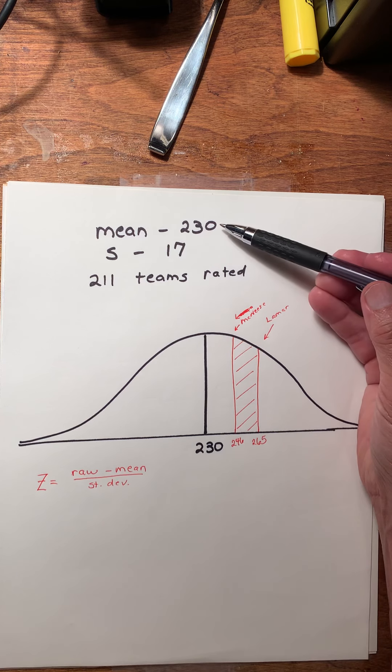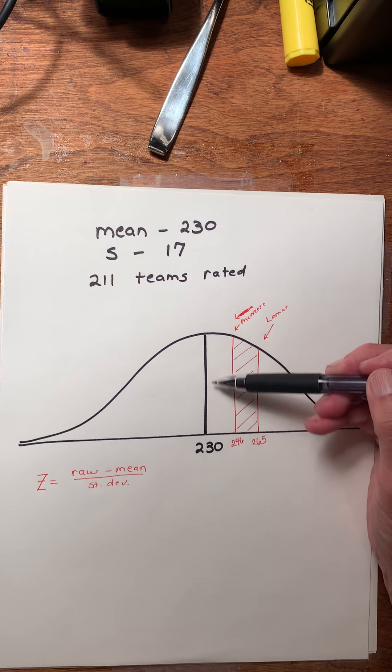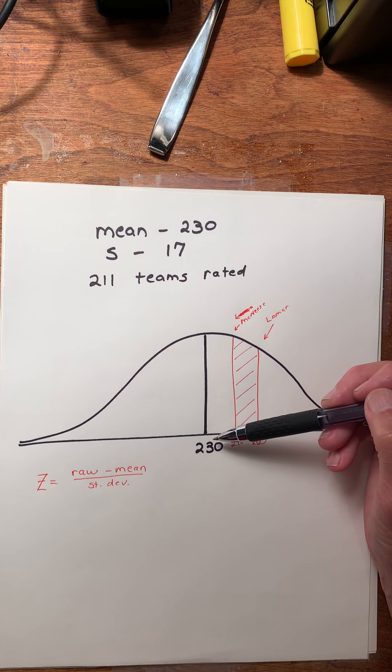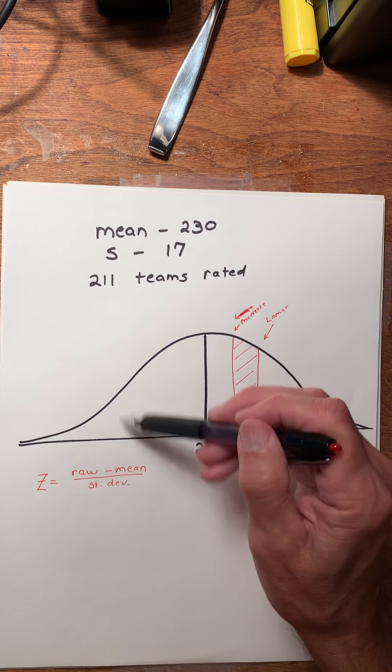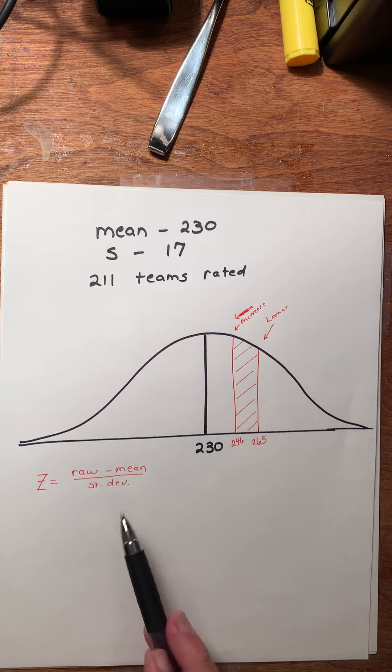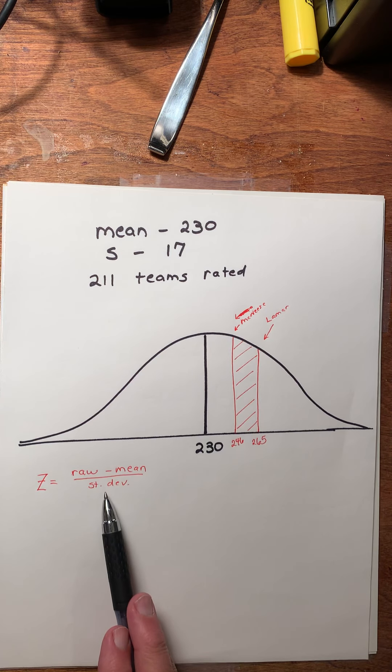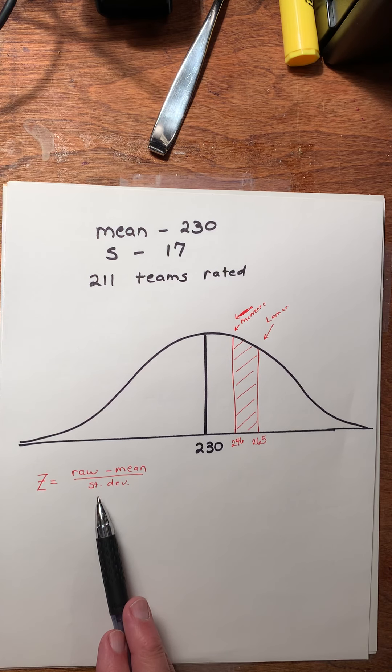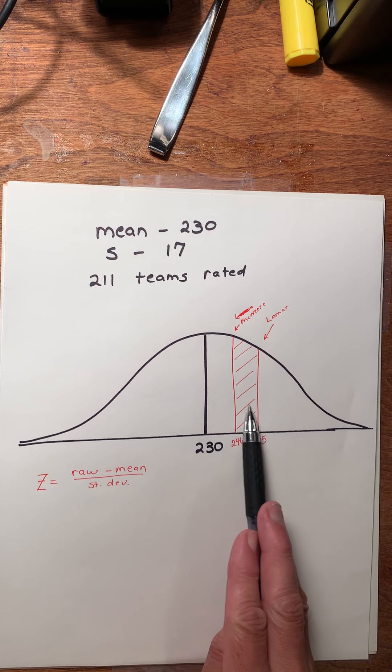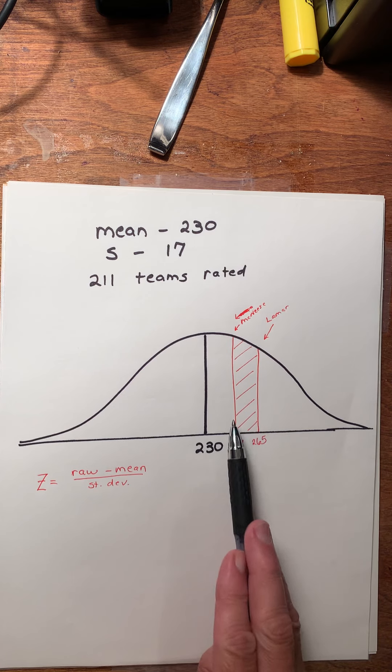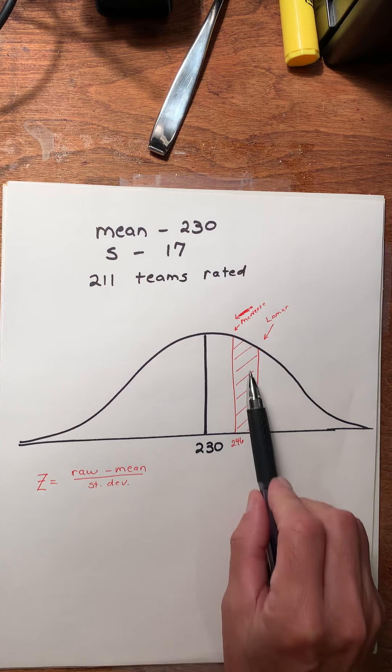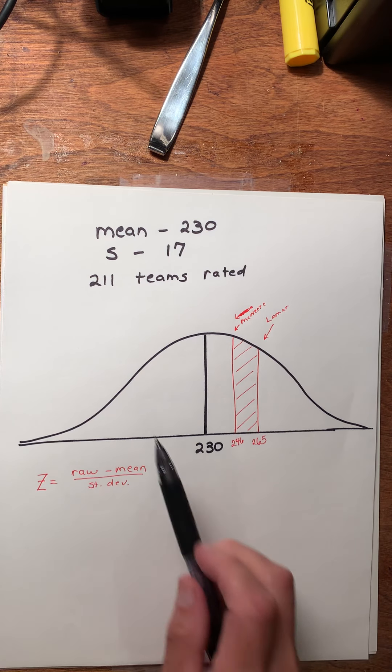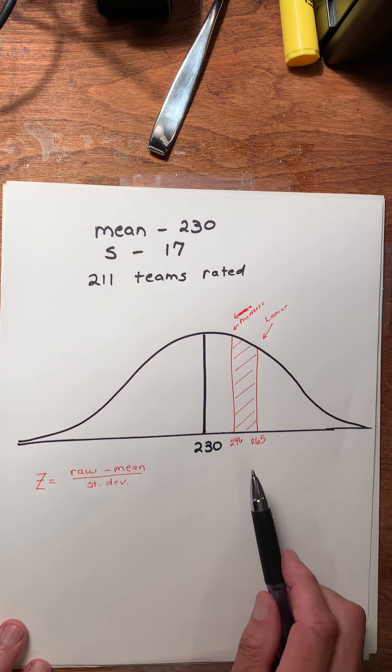Lamar's football team got a power rating of 265. McNeese's football team rating was 246. What percent of schools had football teams with a rating between Lamar and McNeese? The mean is 230, the standard deviation is 17, and there's 211 teams in all. How many are in here?